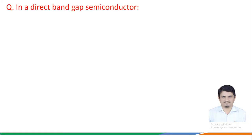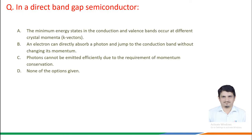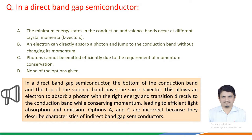In a direct band gap semiconductor, which of the following statements holds true? In a direct band gap semiconductor, the bottom of the conduction band and the top of the valence band have the same K vector. This allows an electron to absorb a photon with the right energy and transition directly to the conduction band while conserving momentum, leading to efficient light absorption and emission. Options A and C are incorrect because they describe characteristics of indirect band gap semiconductors.